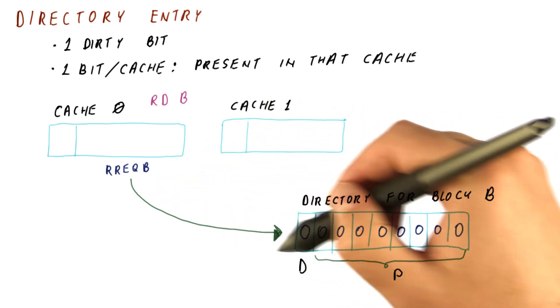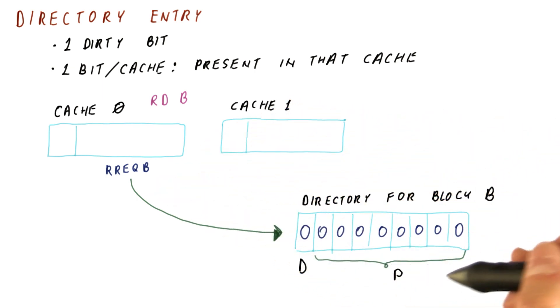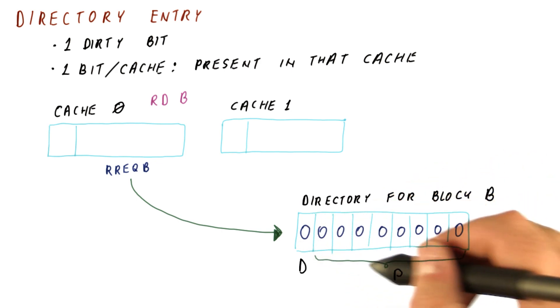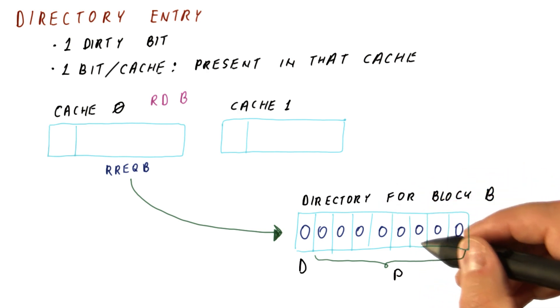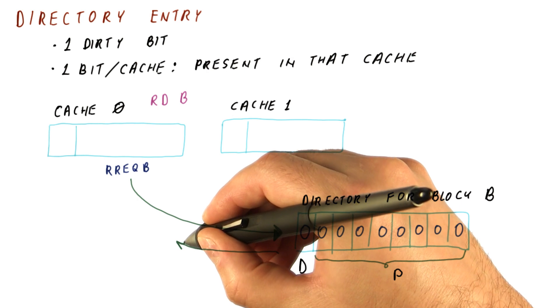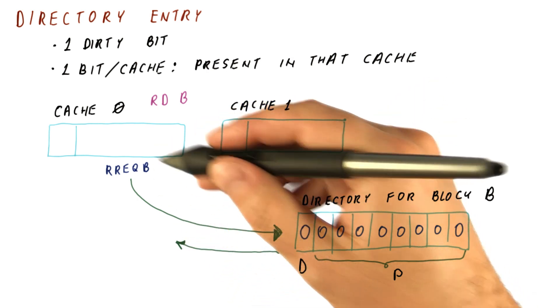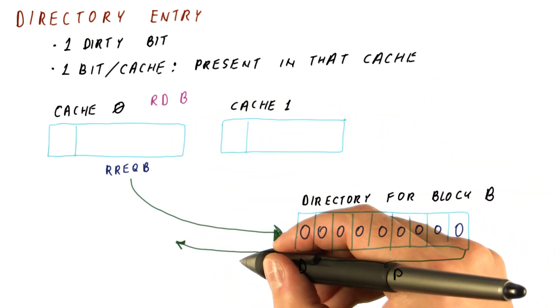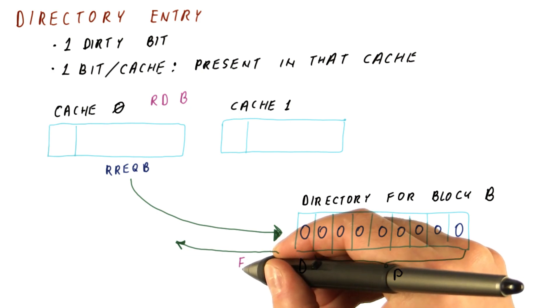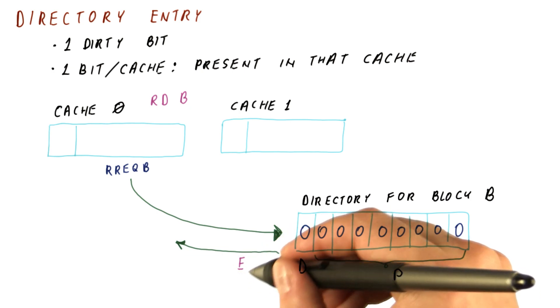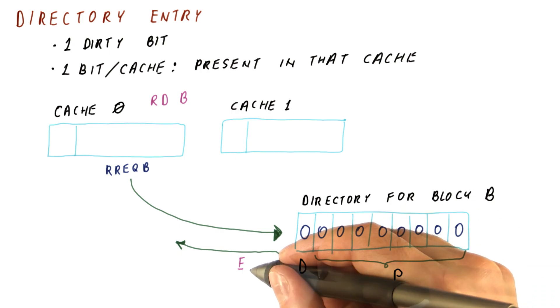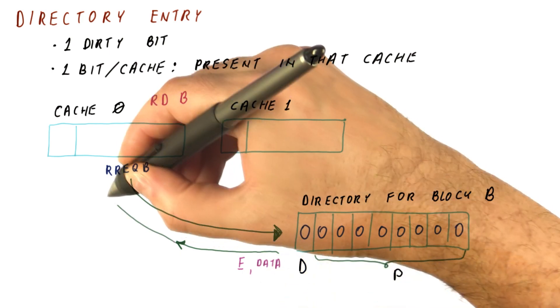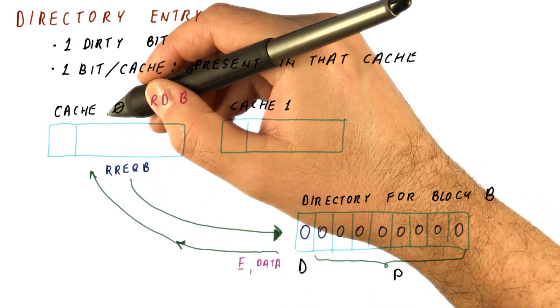And once the request gets there, we'll look at the directory entry for it. The directory entry says that the block is not anywhere in the system. So now we can get the data from memory and send the data back to the cache zero. And we need to tell the cache zero everything that the bus would normally tell it. So we tell it that it has exclusive access because there are no other sharers. And we give it the data. That response gets back to cache zero.